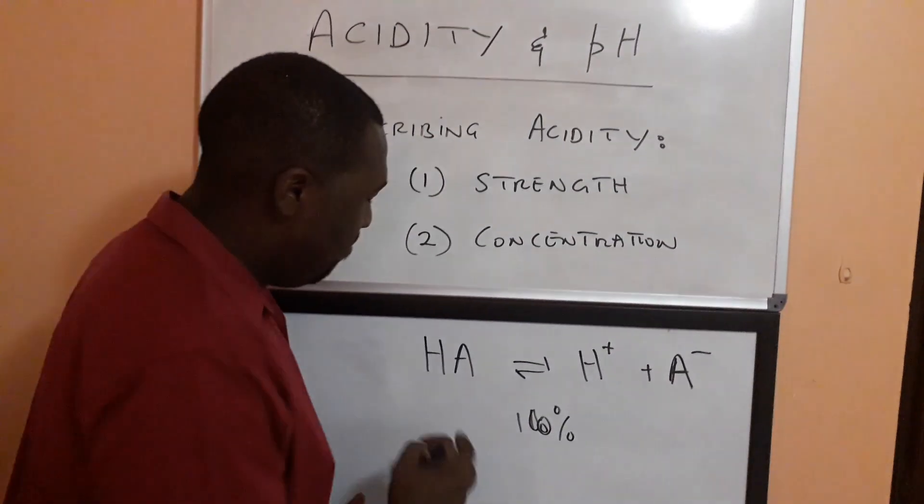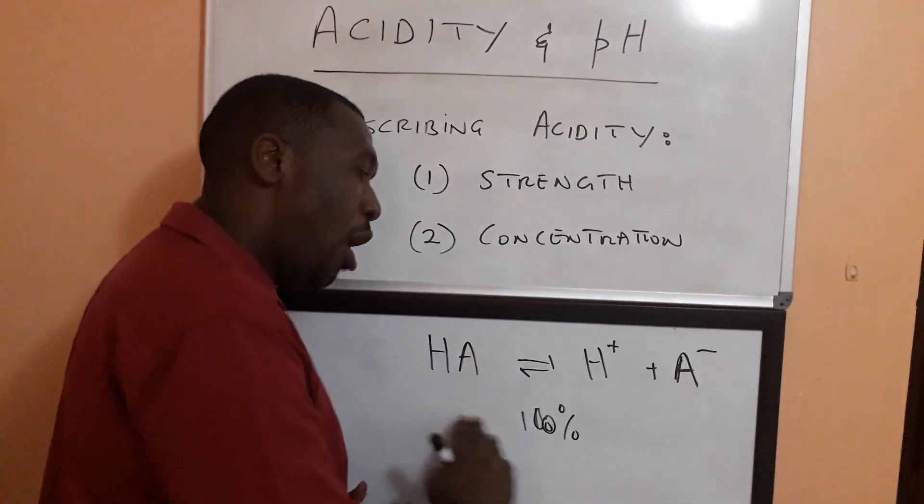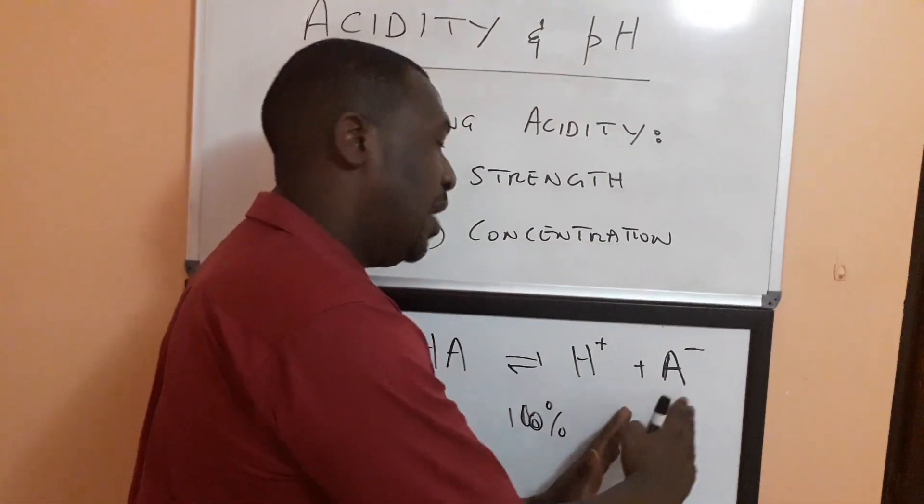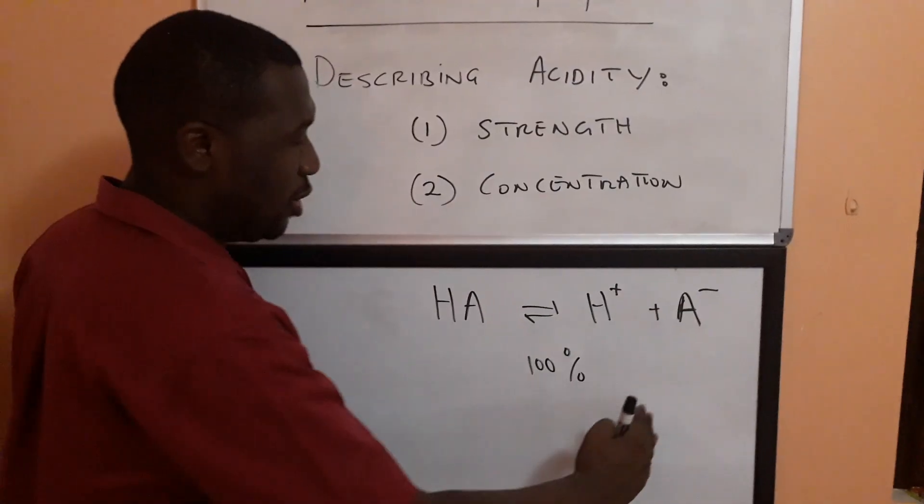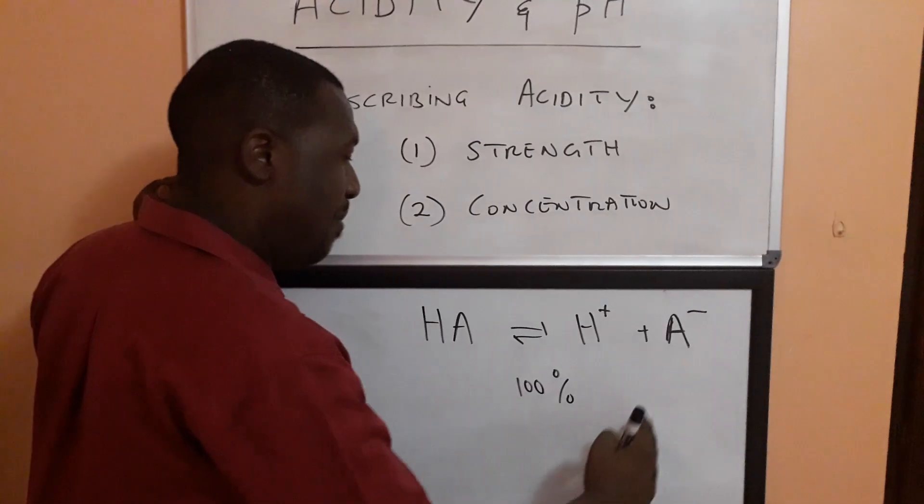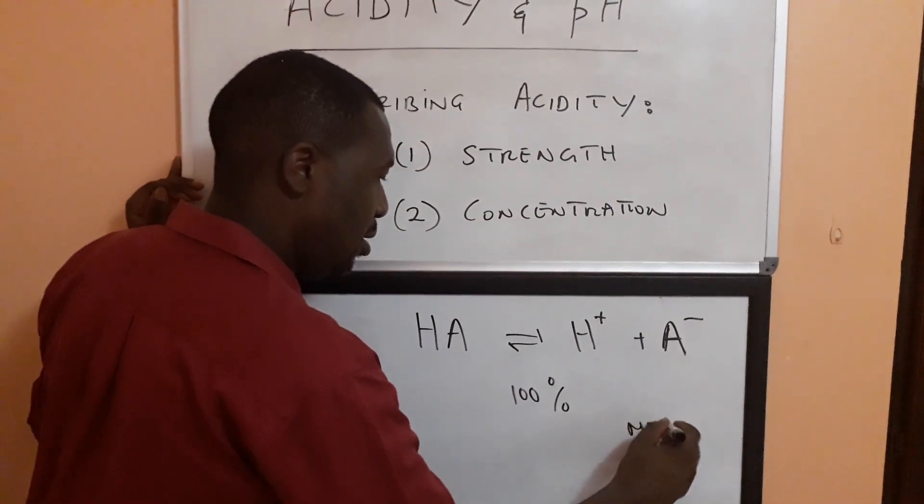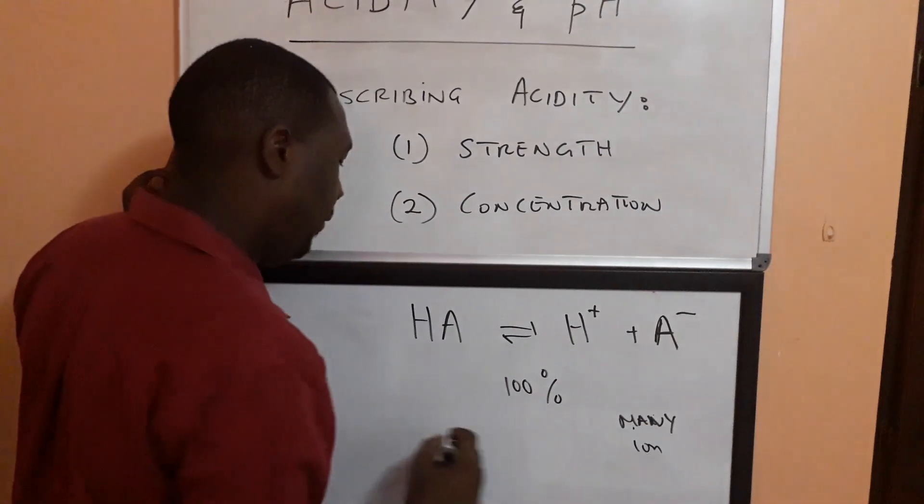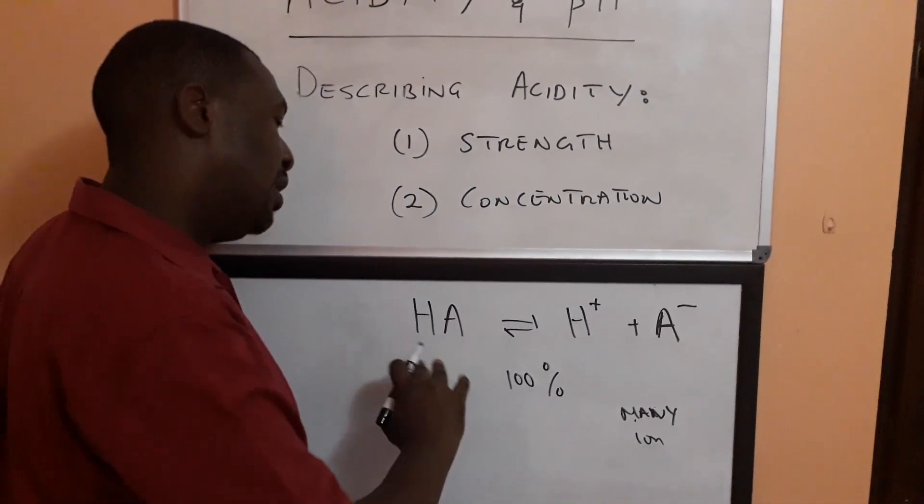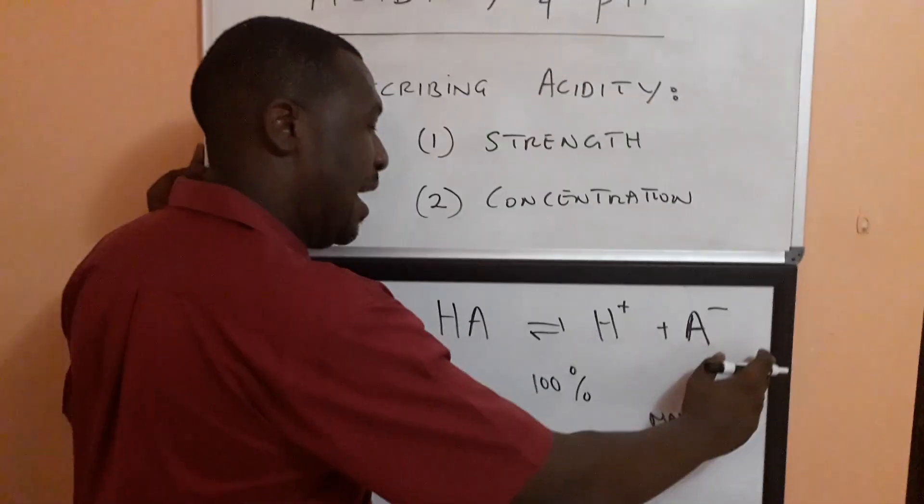So if I had a million molecules of HA all of them will turn into ions and that is what we call a strong acid. So in a strong acid we have many ions and few or no molecules at all. In other words the equilibrium is to the far right.